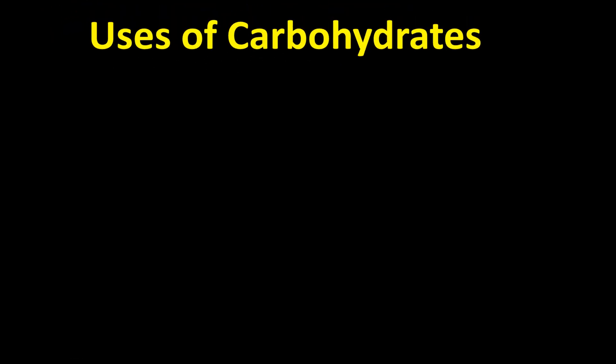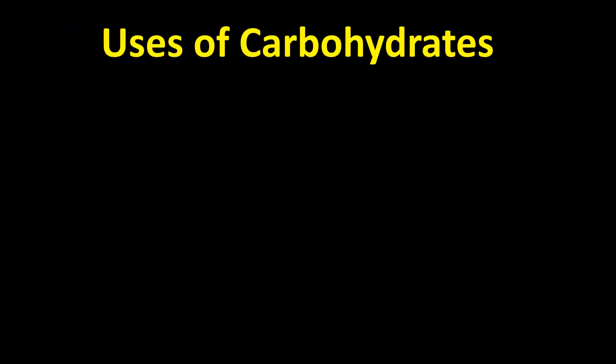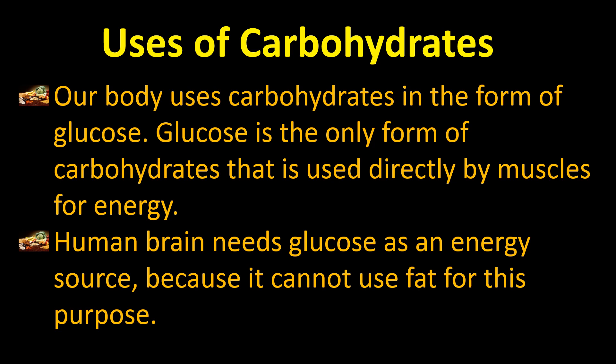After discussing the sources, we will now move toward the uses. Our body uses carbohydrates in the form of glucose — glucose is the basic source of energy. Glucose is the only form of carbohydrates that is used directly by muscles for energy. In our body, we store carbohydrates in the form of glycogen.